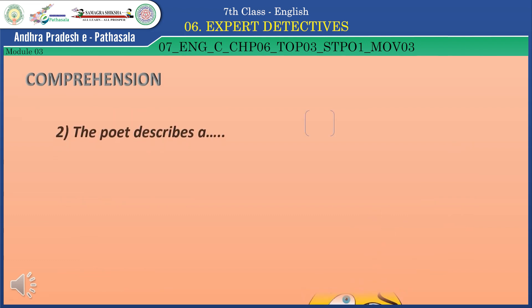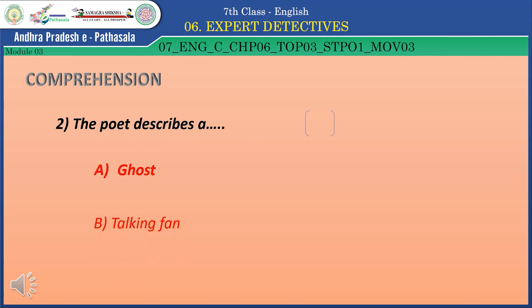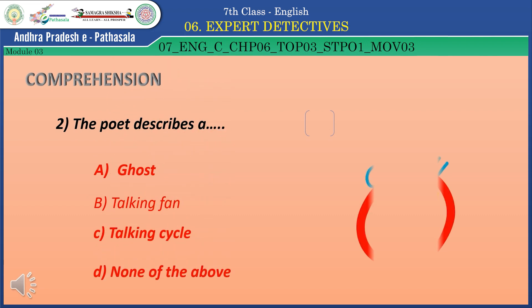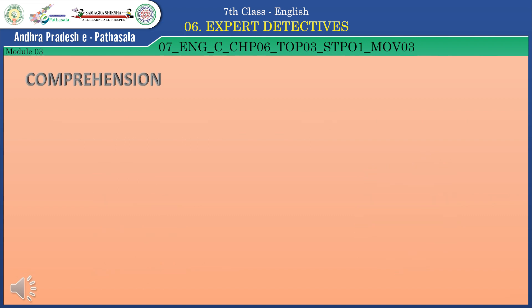Question 2: The poet describes — Option A: Ghost. Option B: Talking fan. Option C: Talking cycle. Option D: None of the above. The correct answer is Option B — Talking fan.